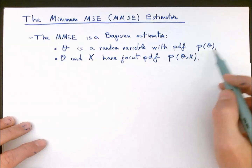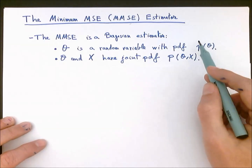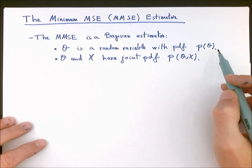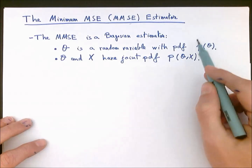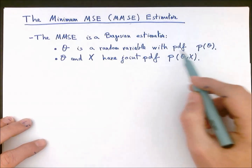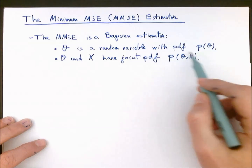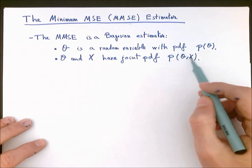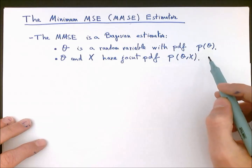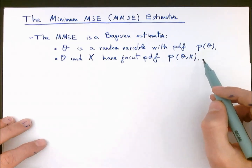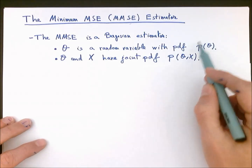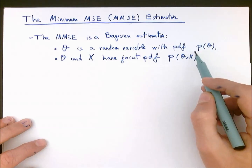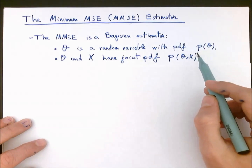Other times, we also define the prior distribution p of z based on tractability and convenience. For instance, we choose distributions for p of z that allow us to easily compute either the joint distribution of the data and the unknown, or the posterior distribution of the unknown parameter given the data. In most cases, the choice of prior p of z is actually done following a mixture of these arguments.